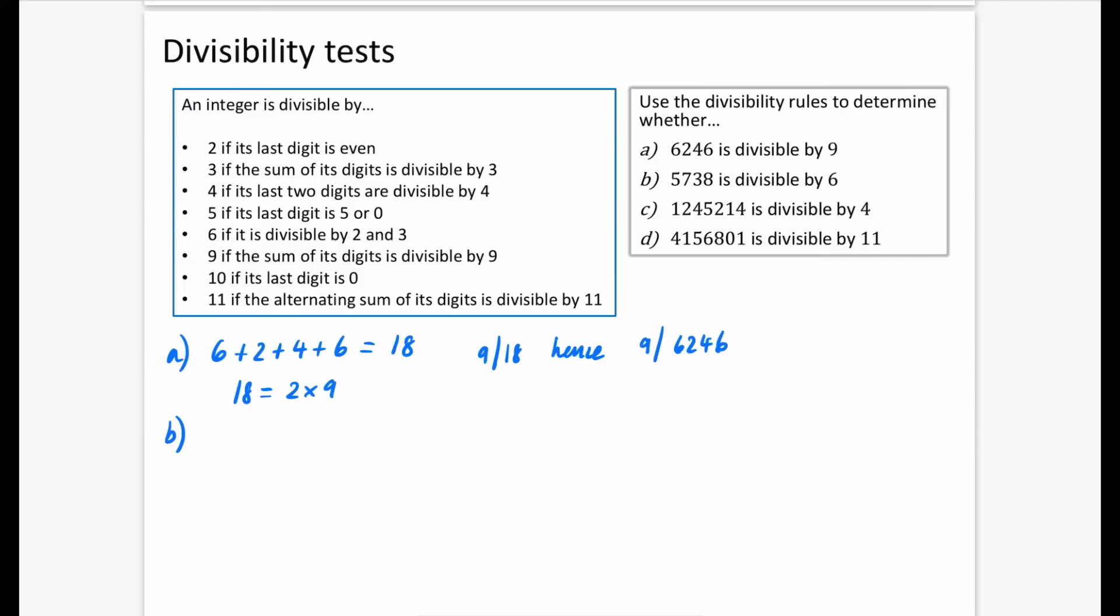Part B, we're going to do one that says if something is divisible by 6. So we're going to say some stuff using these divisibility tests. The last digit is 8. So the last digit, 8, is even. So we can say that 2 divides 5,738. Because we're doing a divisibility test for 6, we'll make sure it's divisible by 2 and 3. Now we're going to do the sum of the digits. So we will do 5 plus 7 plus 3 plus 8. That is equal to 23.